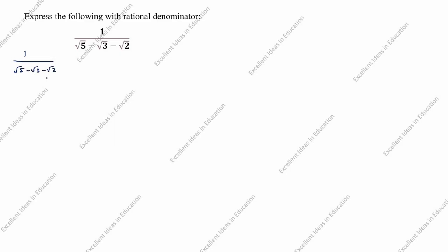You see the denominator is given as three terms. Now we will take two terms: root 5 we will take as 'a', and root 3 minus root 2 we will take as 'b'. So we write 1 divided by root 5 minus open bracket root 3 plus root 2.